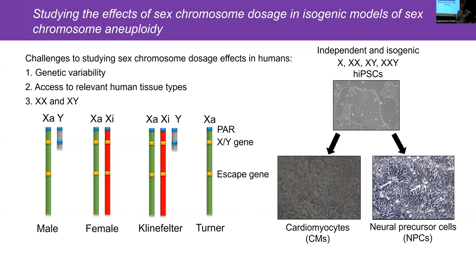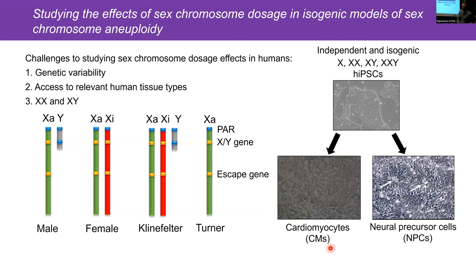Simply comparing XX and XY cells cannot help distinguish the roles of the X from those of the Y. So we differentiated these cells with different numbers of sex chromosomes into disease-relevant tissues. We generated neural precursor cells — you can see rosette formations in the dish — and cardiomyocytes that spontaneously start beating during differentiation, a good indication we have the right cell type.